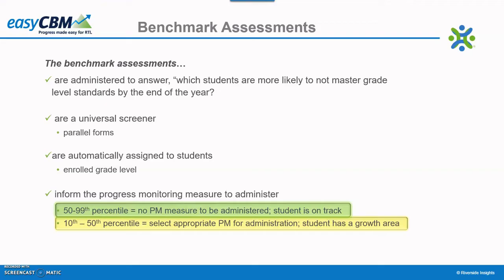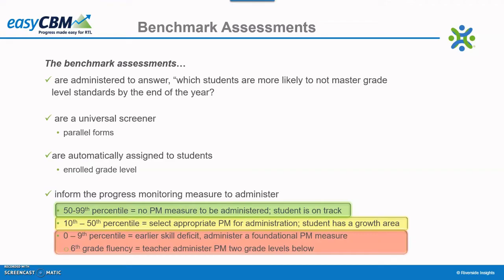The benchmark at-risk report will provide a recommendation for a progress monitoring probe to administer. If a student's score is in the 0 to 9th percentile on any of the benchmark assessments, teachers will need to review carefully the items the student missed. This student likely has a gap in mastery of early foundational skills. Based on where the skill gap lies, the teacher will want to administer a progress monitoring probe one or possibly two grade levels below on an earlier skill, such as letter sounds or phoneme segmenting if the performance was low on the phonics benchmark measure.